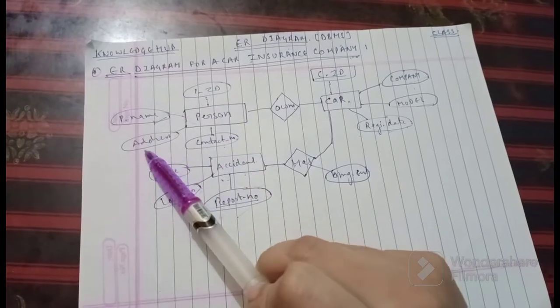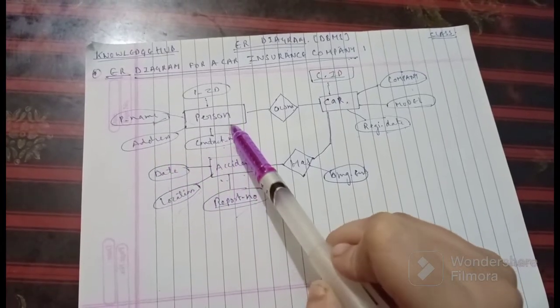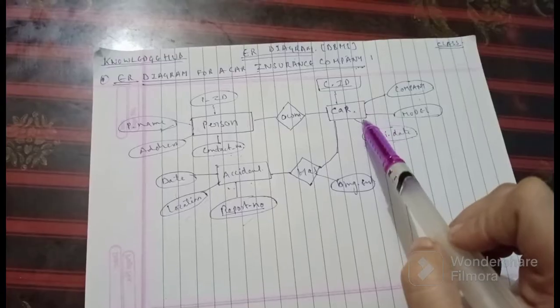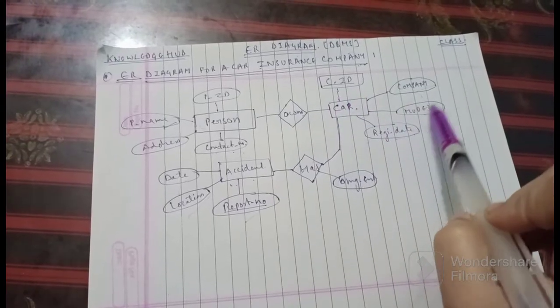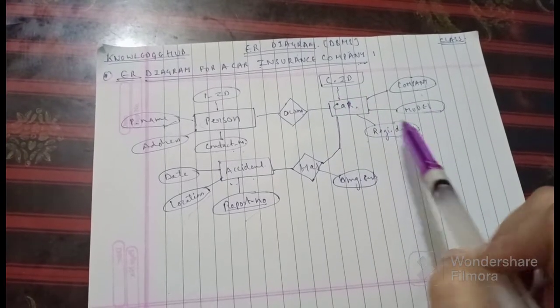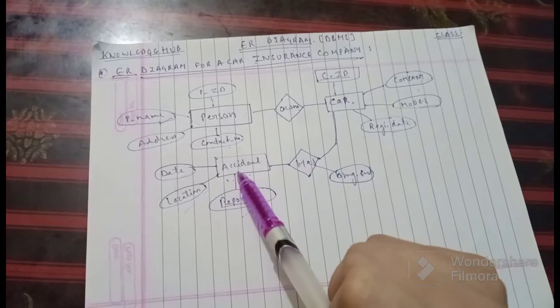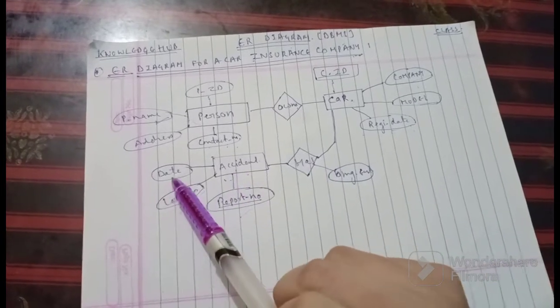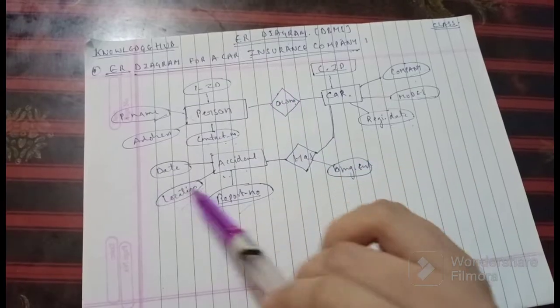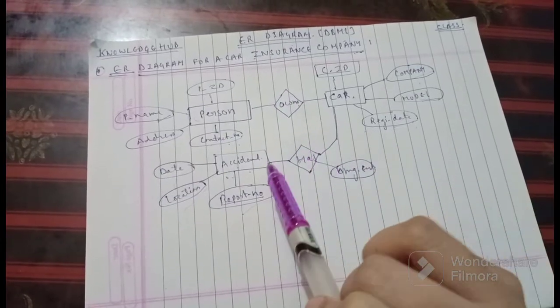The complete ER diagram: personal ID, personal name, address, and contact number of a person. If it owns a car, it will be car ID, company, model, and registration date. Then if it has an accident, then of course the date, location, and report number. This is the ER diagram for a car insurance company.